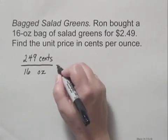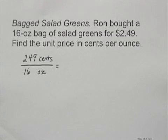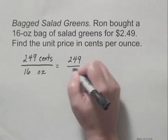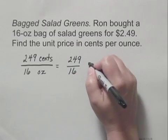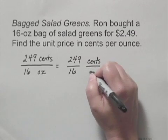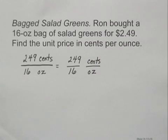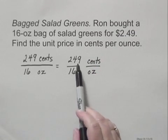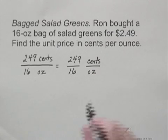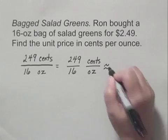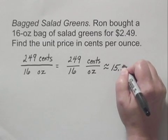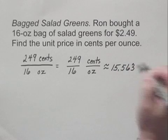We can separate this to show that we have the correct unit price. This is 249 divided by 16, and the units are indeed cents per ounce. When we do the division — 249 divided by 16 — and round to three decimal places, this is approximately 15.563.